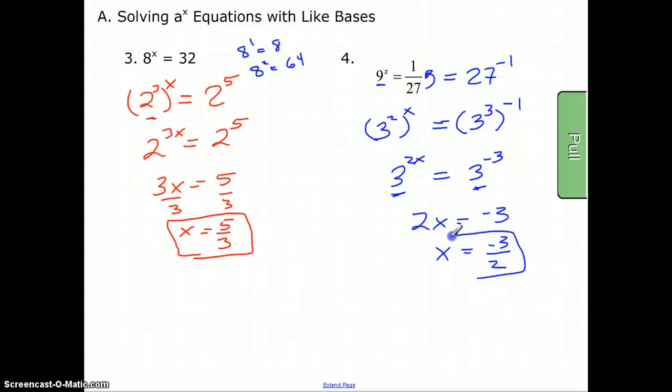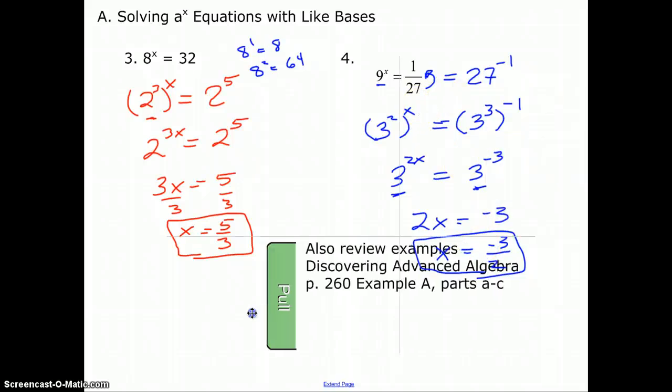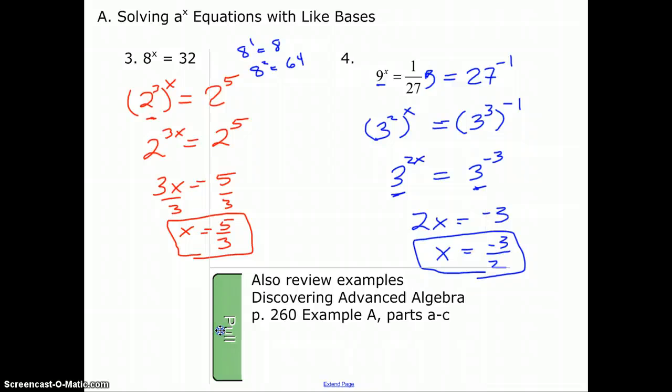Again, we can look at this number going to twenty-seven, and the only way for nine to get bigger is that the power has to be bigger than one. 9^2 would give us eighty-one, so we know it's between one and two for the exponent, and indeed the three halves gets it there. Then the negative simply just flips it. So to look at a couple of additional examples, I recommend that you look at the Discovering Advanced Algebra book, page 260 in section 5-2. Example A has parts A through C, gives you three more examples.